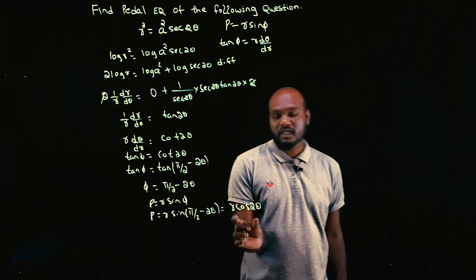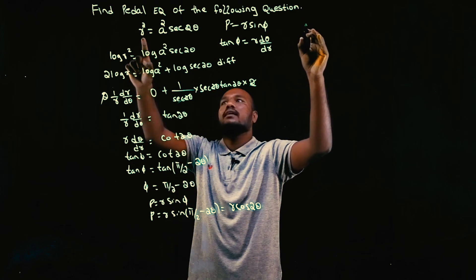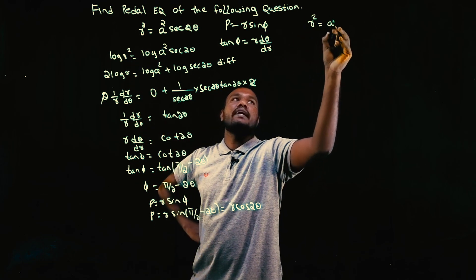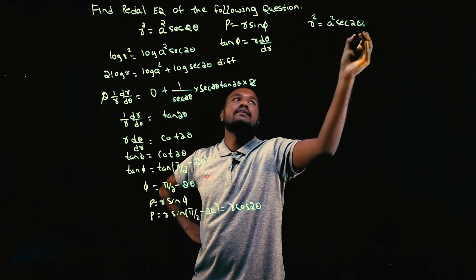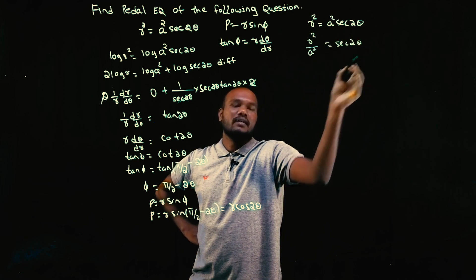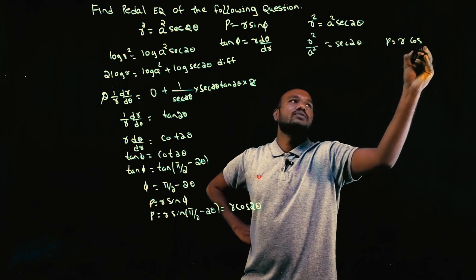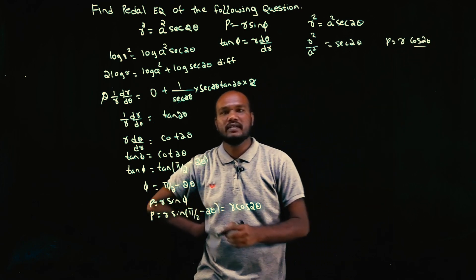We have r² = a² sec 2θ, so r²/a² = sec 2θ. In our equation p = r cos 2θ, we need cos 2θ. Flipping sec 2θ gives cos 2θ = a²/r².